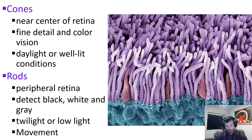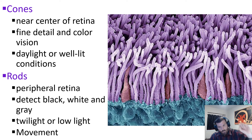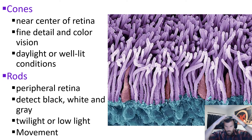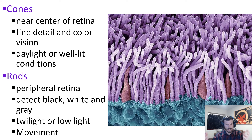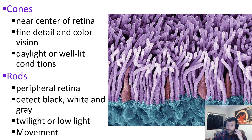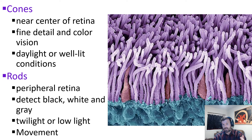Now let's delve into the retina and talk about the different sensory receptor cells. Receptor cells take one type of energy and transform it into another. Light travels in waves, but we don't have waves bouncing around inside our brain. Our rods and cones take those wavelengths and transfer that energy into neural signals that travel down through the optic nerve to the occipital lobe of the brain. That process is known as transduction — the turning of one energy type into another. That's how we see.